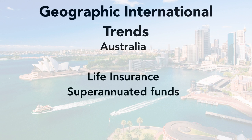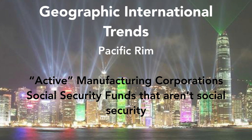In Australia, we see a lot of life insurance issues and superannuation funds. In the Pacific Rim, there are a lot of active manufacturing corporations that U.S. expats may own with a few partners, so we have some really complicated Form 5471 reporting to do. Also, there are a lot of Social Security-type funds that aren't really Social Security — we notice in Singapore that these are actually not exempt, and we have to get that cleaned up.